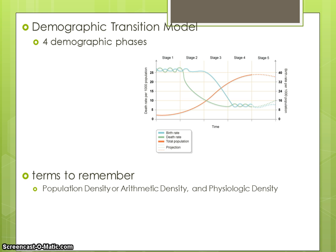In stage four, population increases a lot and birth rates and death rates are pretty constant — people are well educated and understand they don't need many children, so population is steady. Stage five is theoretical because no country has reached it yet, but scientists predict population starts to decline a little while birth and death rates go up slightly.